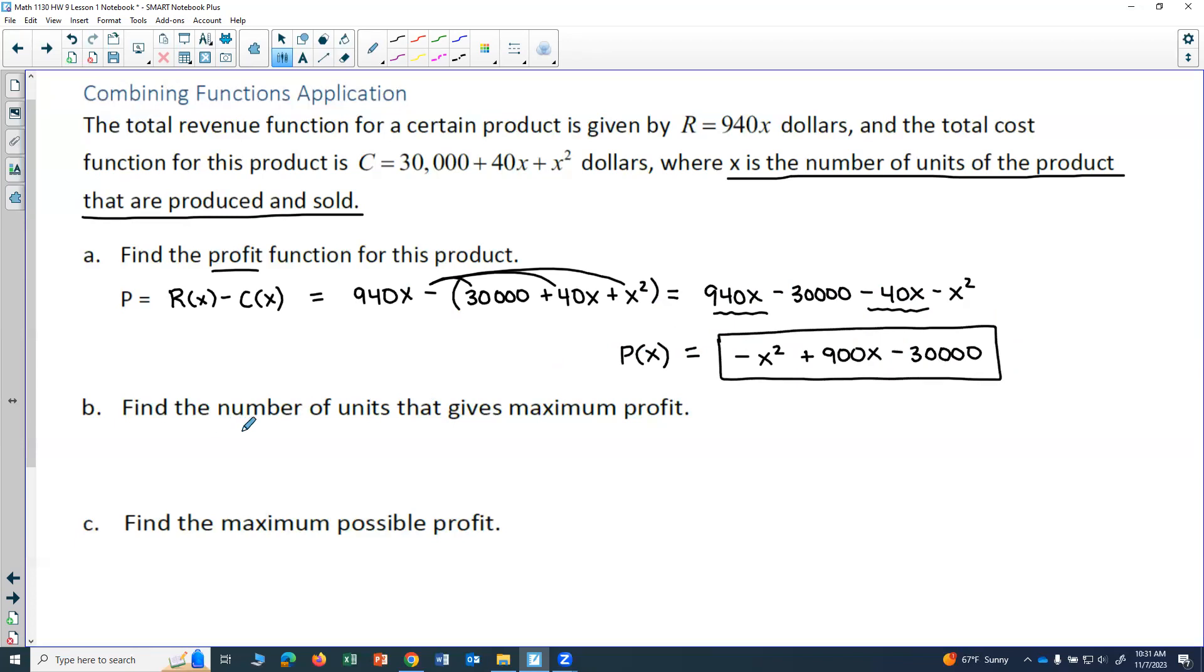So now they say find the number of units that gives maximum profit. And we're looking for the number of units, which is x. x is the number of units. So I'm looking for x, the x that gives me maximum profit.